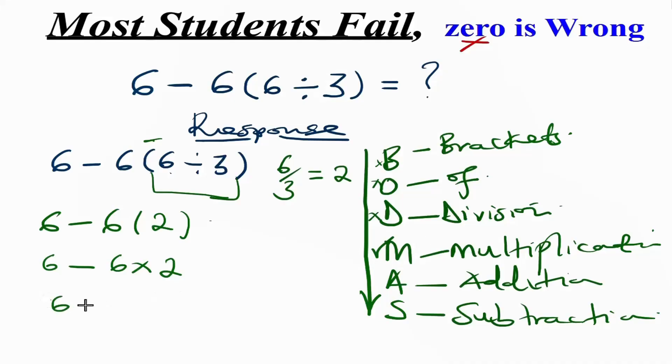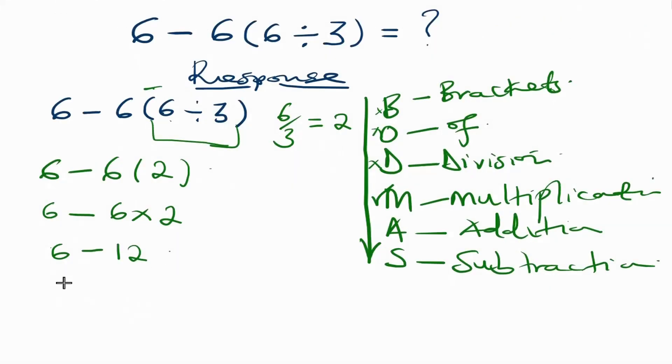Therefore it implies that we are going to have our 6 minus the 6 multiplied by 2. We get the result as 12, so we have 6 take away 12. As we simplify further, it means that we are going to have the final result as negative 6.